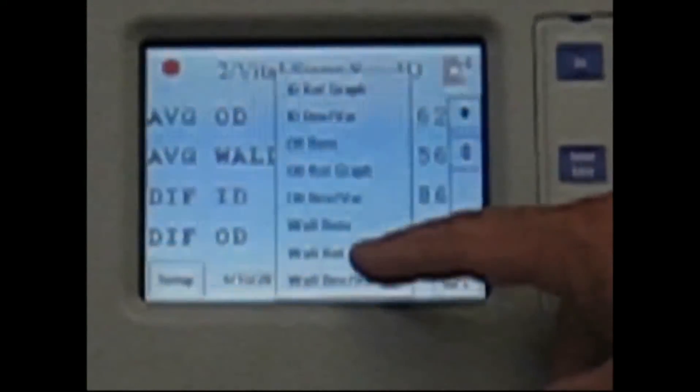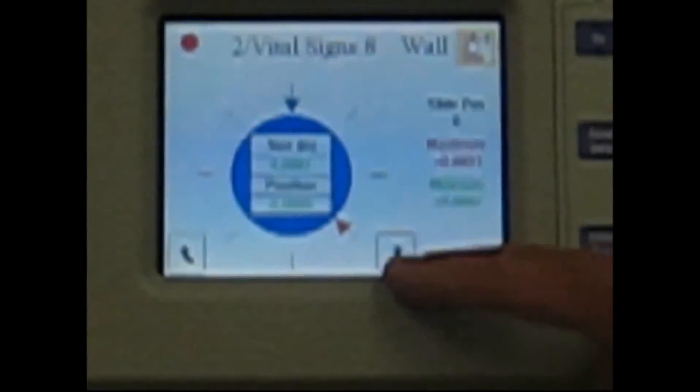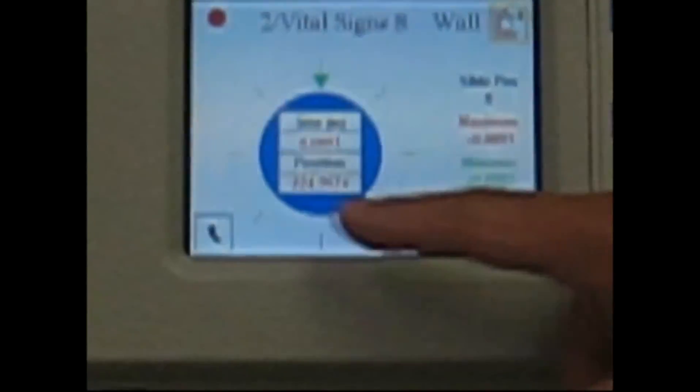You can then press this button again to go and look at the wall graph, to look at the readings, graphical readings, and then index around to look at the wall thickness around the circumference of the tube. The degree indicator is at the bottom of that graphic that's shown there.